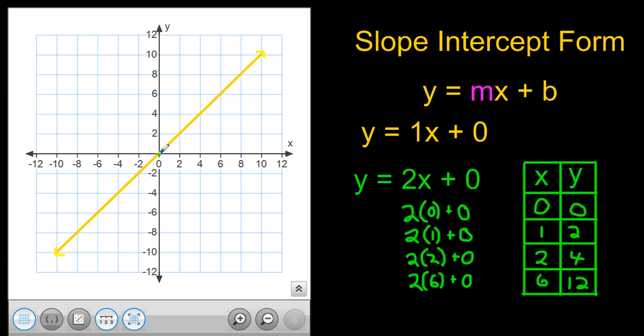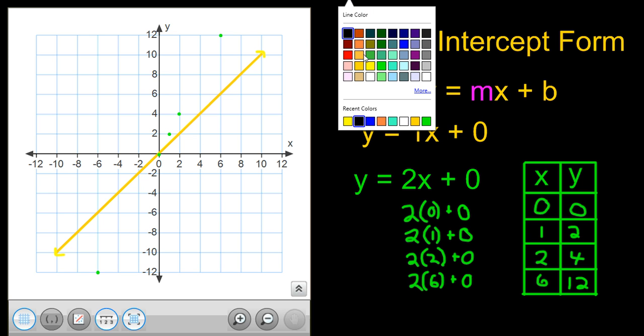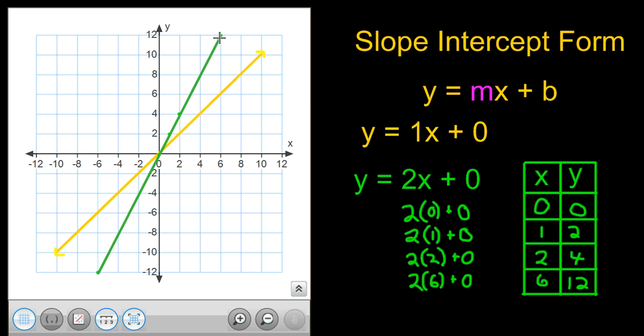Now, I can graph my points. Zero comma zero again, the origin. One comma two. Two comma four is another point. And then, I went all the way up to six, twelve. Which works out really nicely on this graph. And I can connect those with a line. If I wanted, I could even figure out what negative six would be for the x value. And negative six times two is negative twelve. So, it kind of gives me some points that are a little bit farther away. And it helps me to graph it more accurately with a little bit longer line. And now, I'm going to go ahead and put my arrowheads on those lines. And there we have our next graph. Let's do the next one.